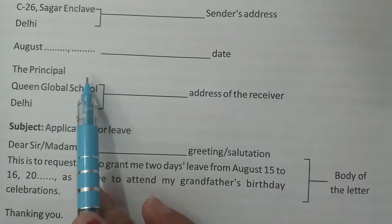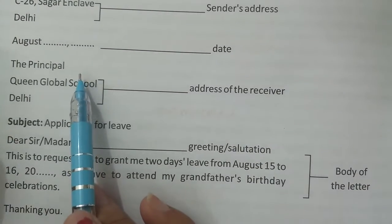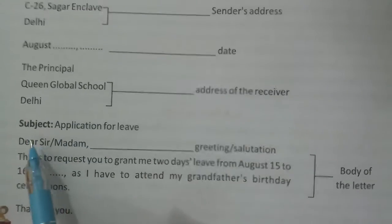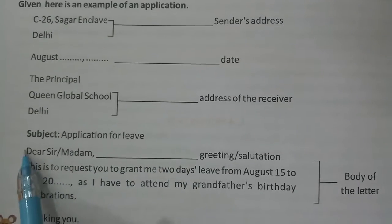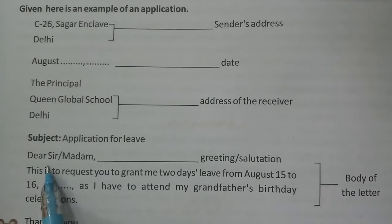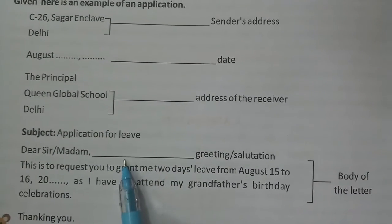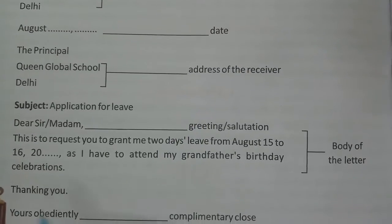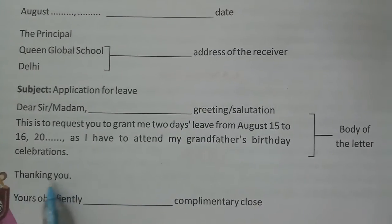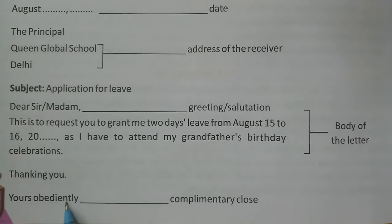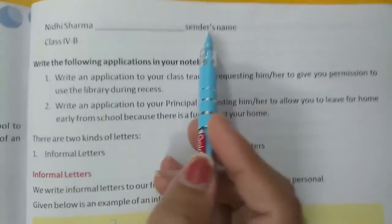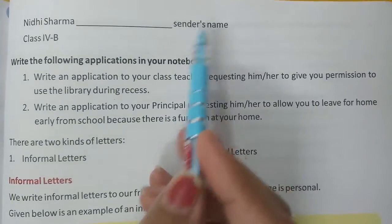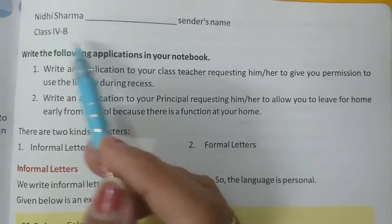Then write the subject — for example, 'Application for leave.' After that, write down the body of the letter. Then write the complementary clause: 'Thanking you, yours obediently.' After that, write down the sender's name, and then class or section.